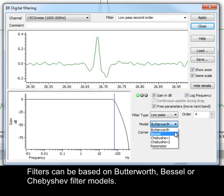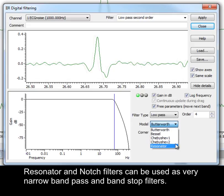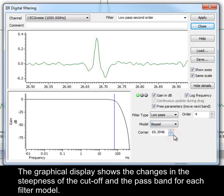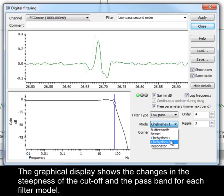Filters can be based on Butterworth, Bessel or Chebyshev filter models. Resonator and notch filters can be used as very narrow band pass and band stop filters. The graphical display shows the changes in the steepness of the cutoff and the passband for each filter model.